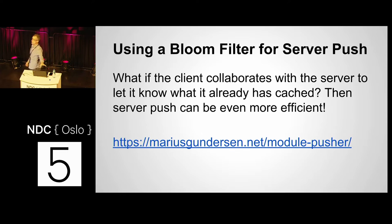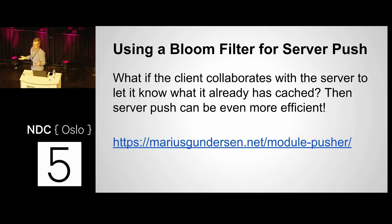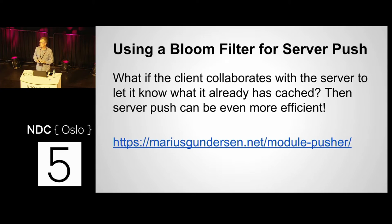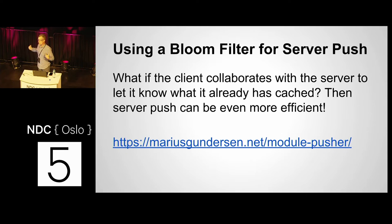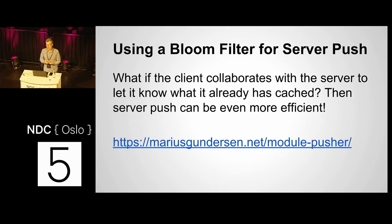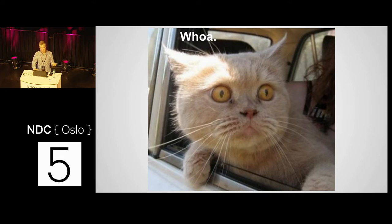There's some other interesting work — something called a bloom filter. If the client can collaborate with the server and say, I've got a bunch of stuff in my cache for this domain — and just tell the server in a compact form the last hundred files requested from this domain — something like a service worker would be great for implementing this. Server push can be made even more efficient: you send a list of priority requests and what you already have. The server looks at that and says, I can see you don't have this in your cache, so I'm just going to start sending it now.